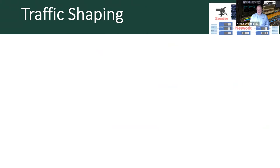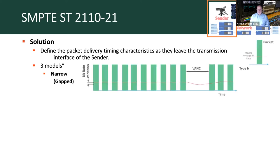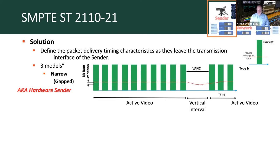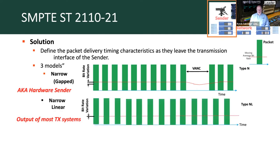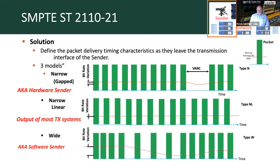With that in mind, 2110-21 defines the packet delivery timing characteristics as they leave the transmission interface of the sender. Within 2110-21, there are three models: the narrow gap, typically hardware senders; narrow linear, typically used in transmission systems; and finally wide senders. With the adoption of software-based applications, we're seeing more and more software senders being deployed within these systems.